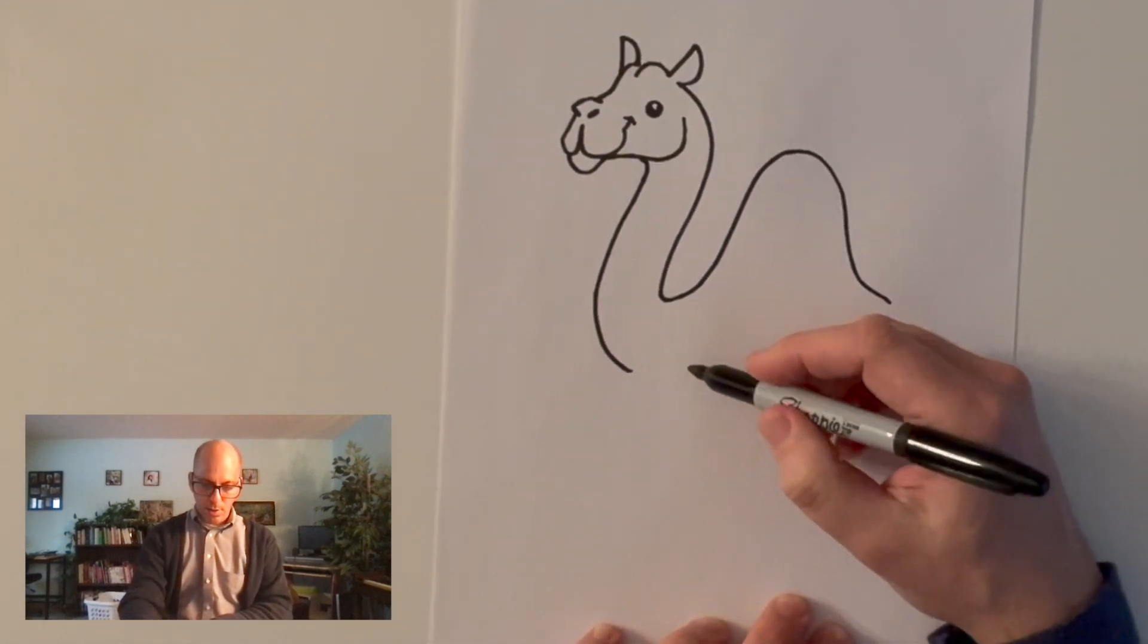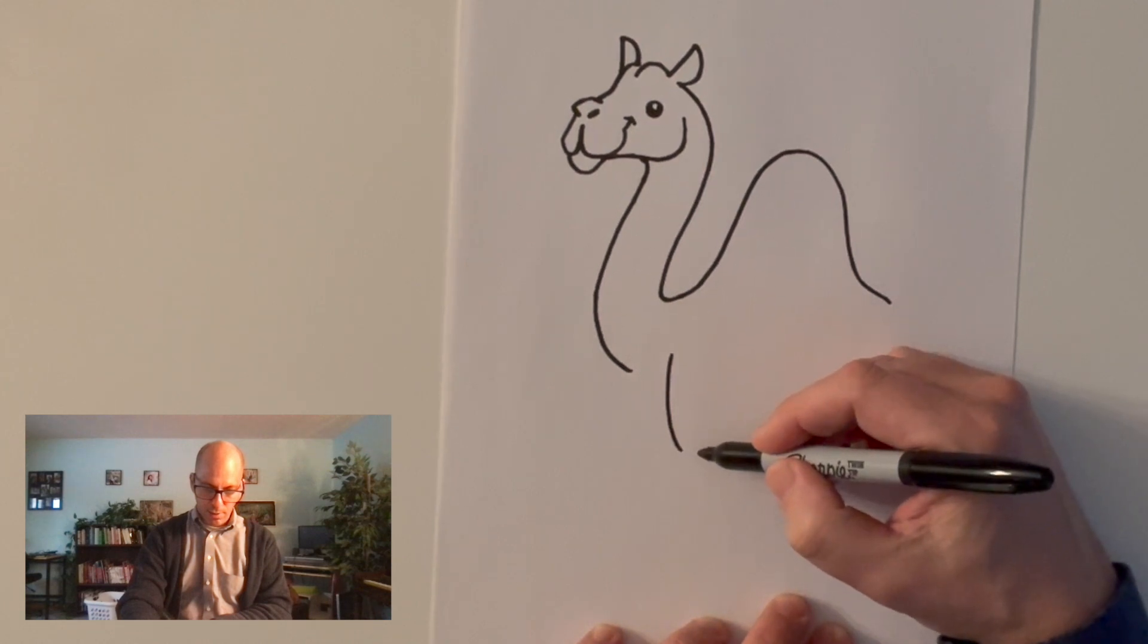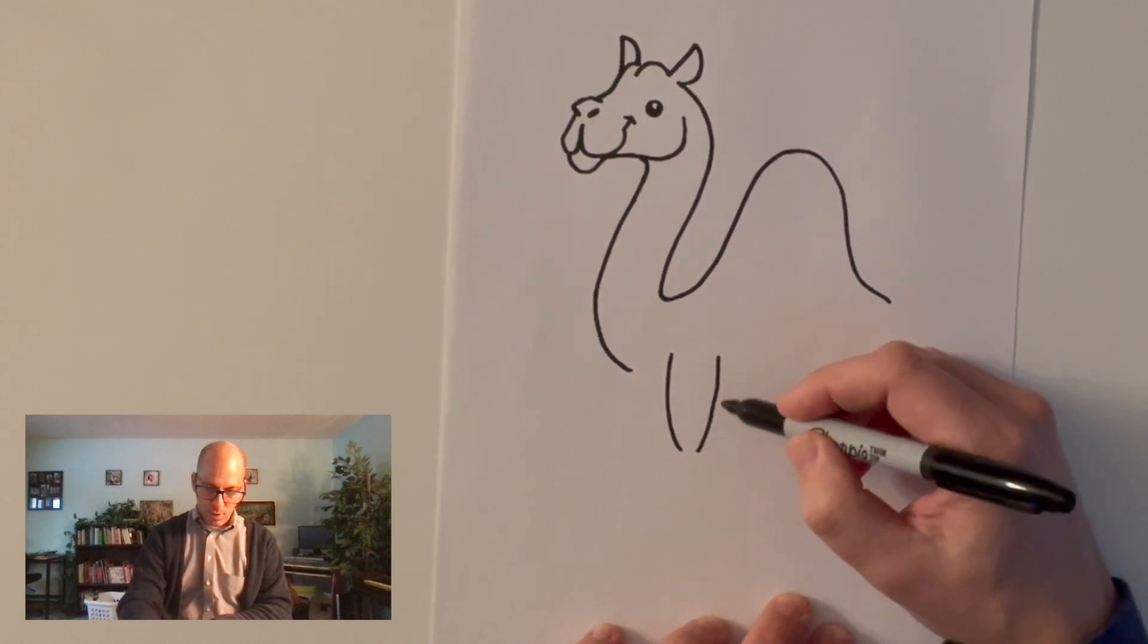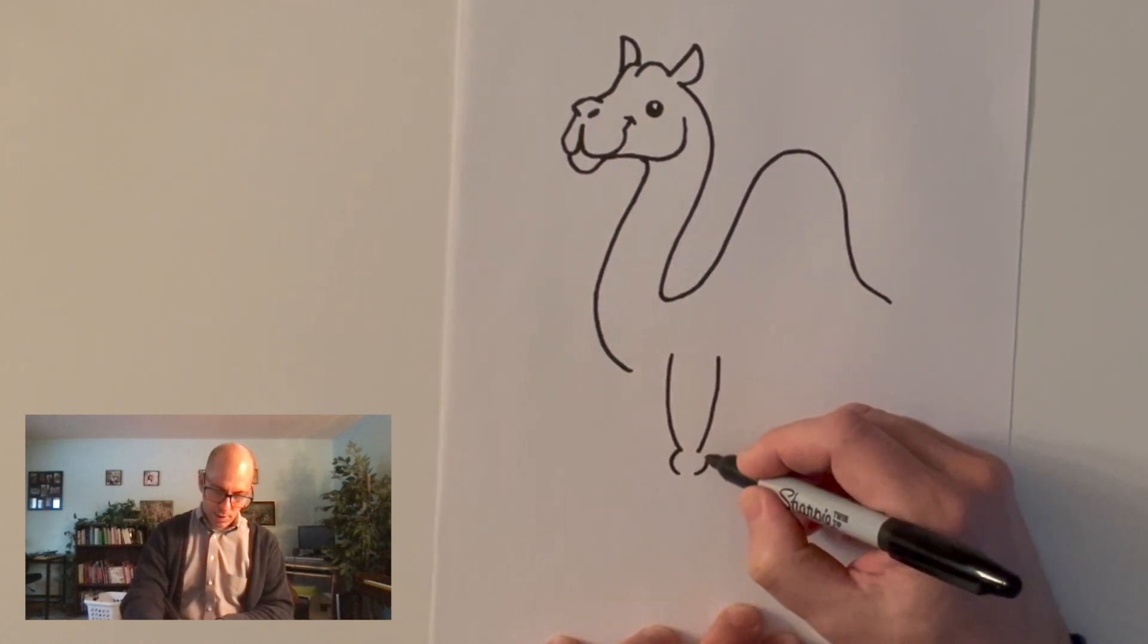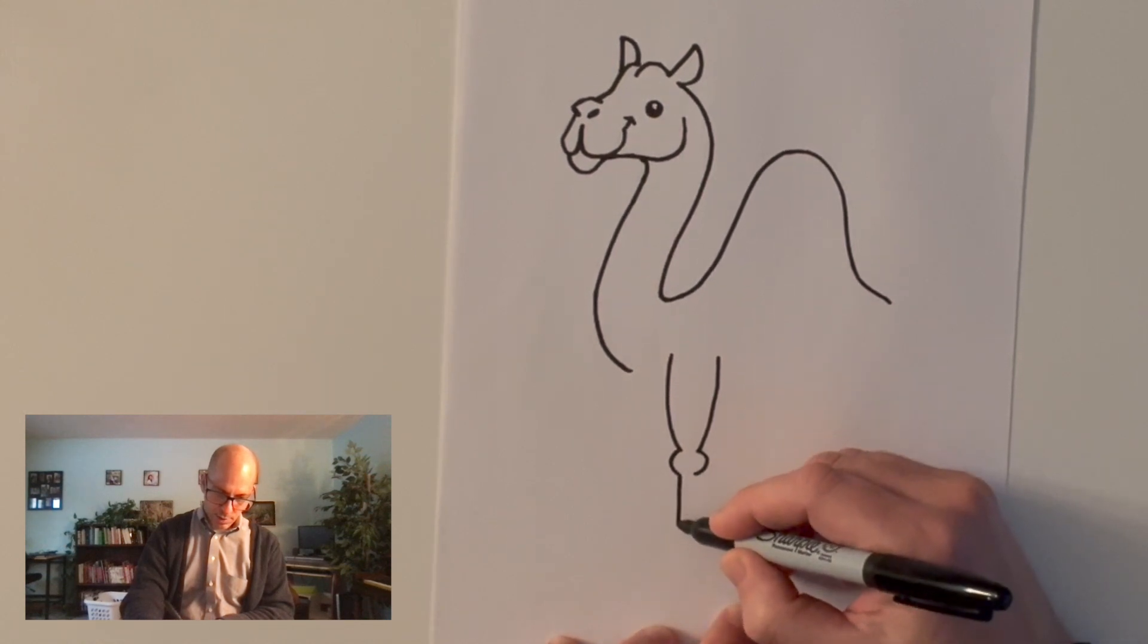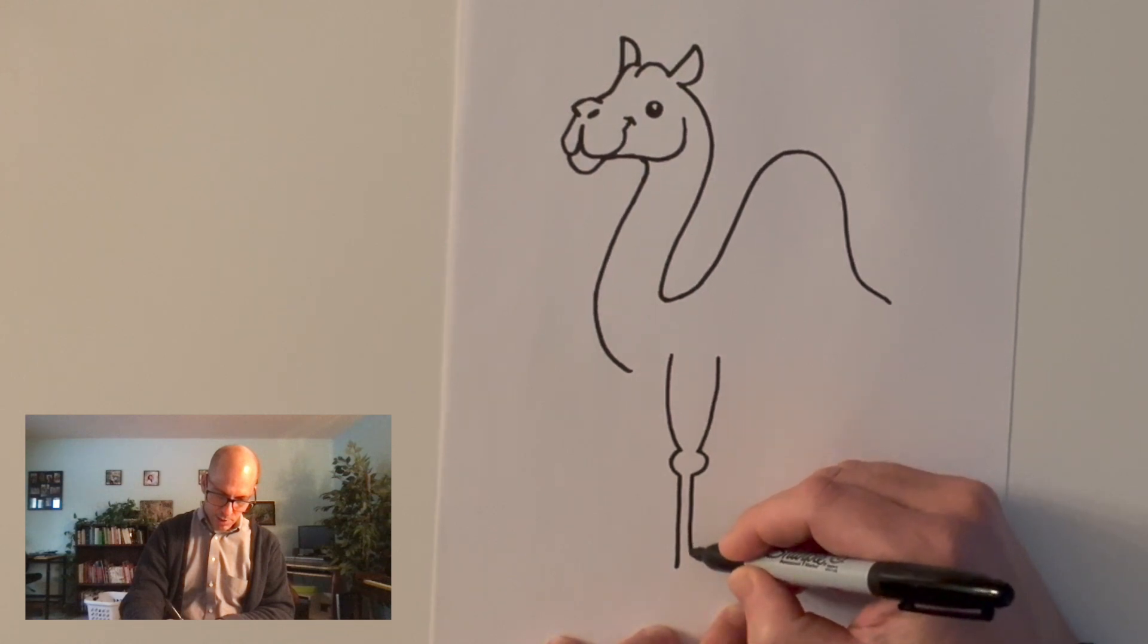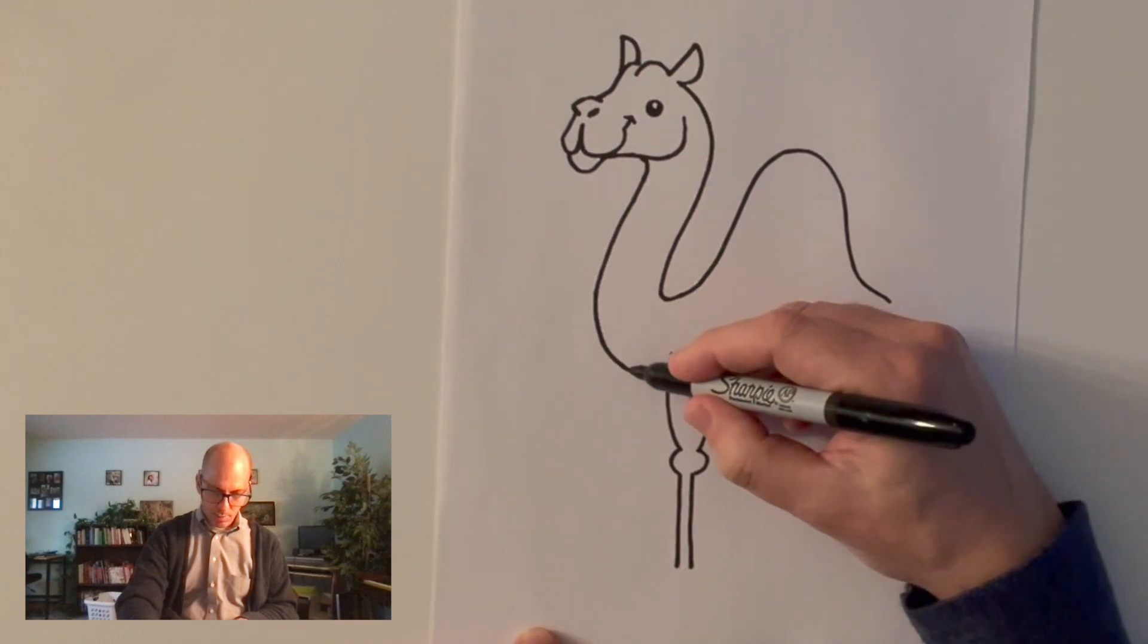So coming out of the hump, of course, you need the first leg, the front of the leg. I like to do kind of like a wine glass shape. And then they have like circle knees. Camels have very interesting knees. And then coming down under that, just a straight pair of skinny parallel lines. So that's going to be my camel's first leg.